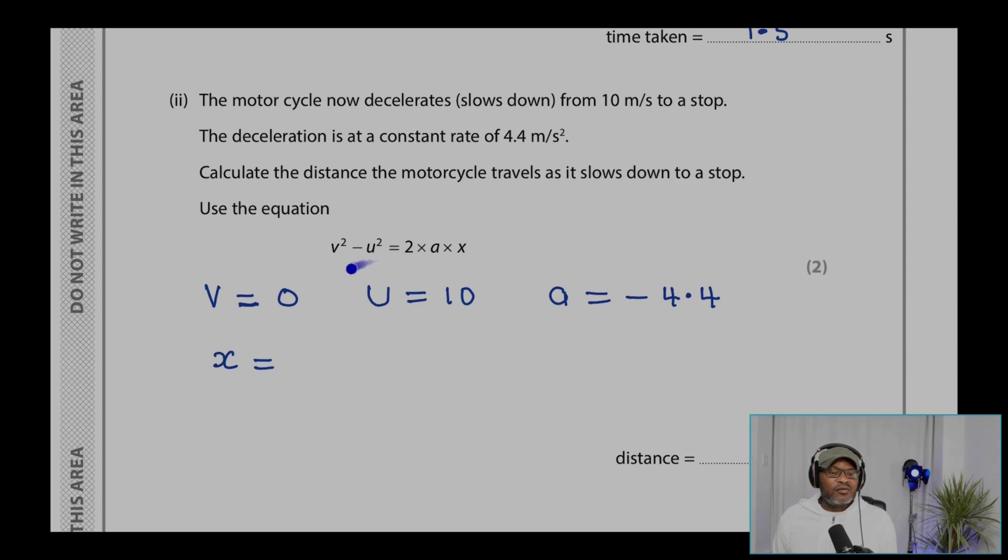So X can be written as V squared minus U squared over 2A, making X the subject here.